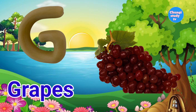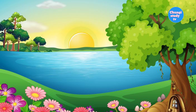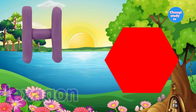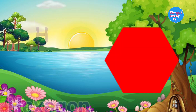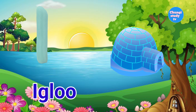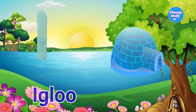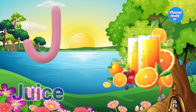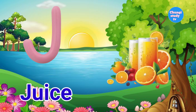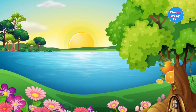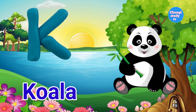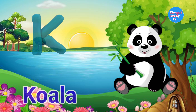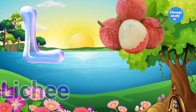G for Grape. H for Hexagon. I for Igloo. J for Juice. K for Koala.